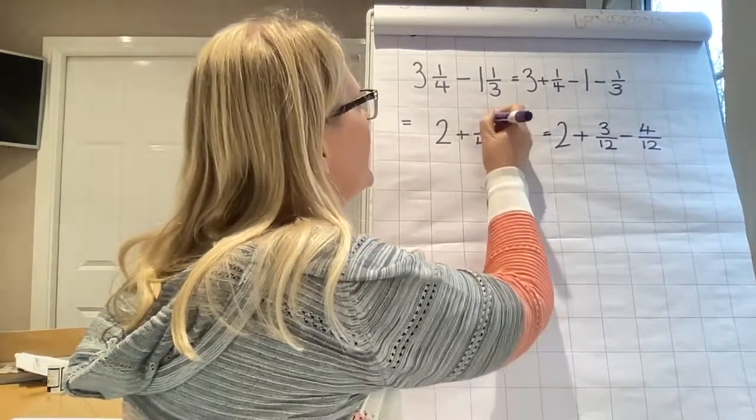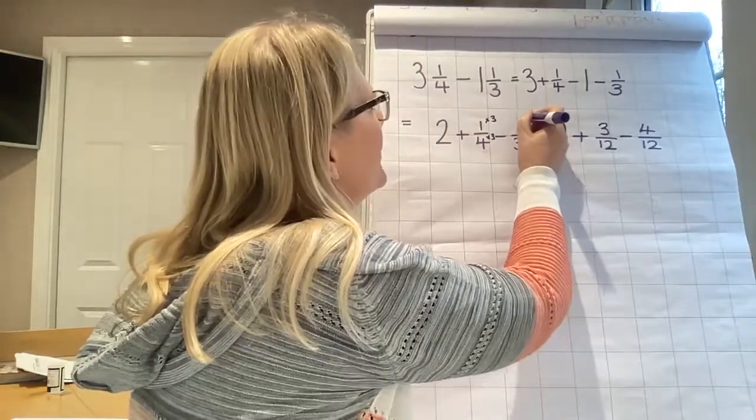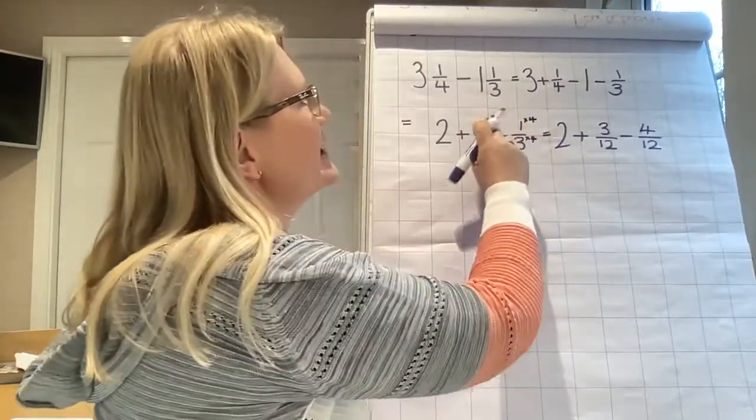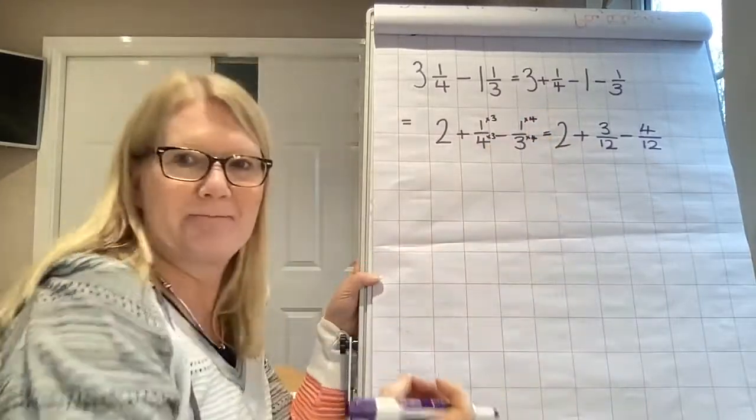So I'm going to multiply that by three. I'm going to multiply that by four. I'm going to multiply that by four. So then you can see that you've got your three twelfths and four twelfths.